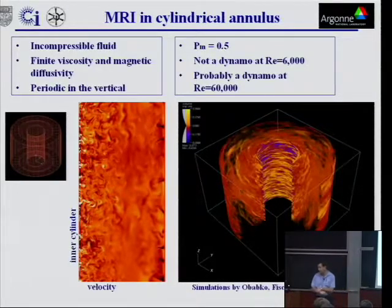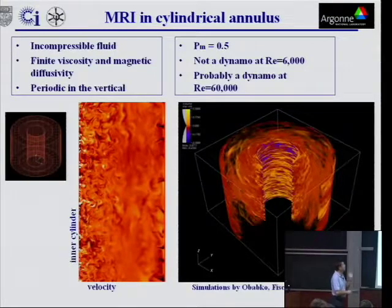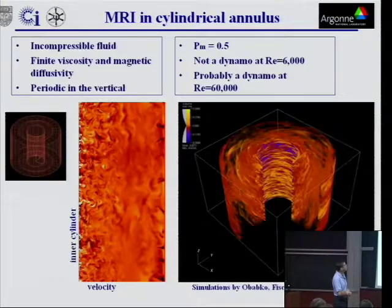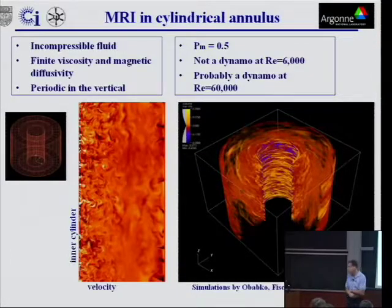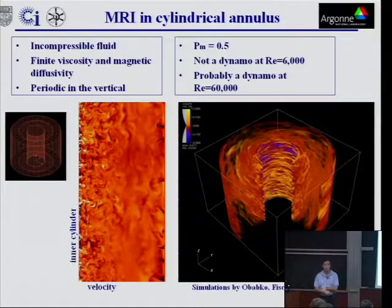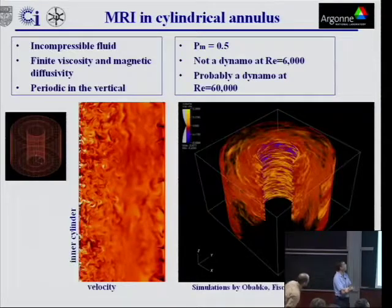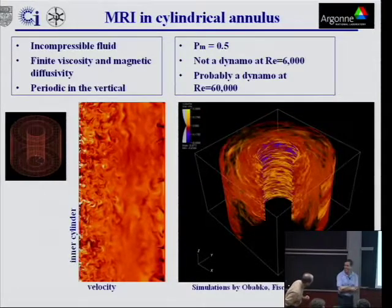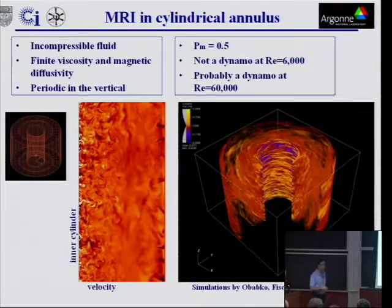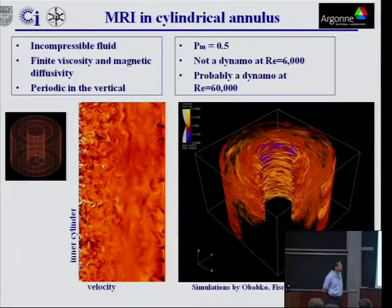So let me try to be a little bit more concrete and look at some results of numerical simulations. So this is the poster that is sitting outside, but just so that we have some picture in our head of what we're talking about. So this is a model of the MRI in a cylindrical annulus.